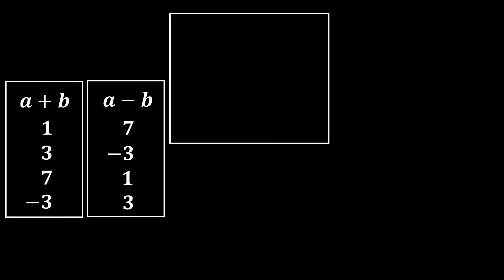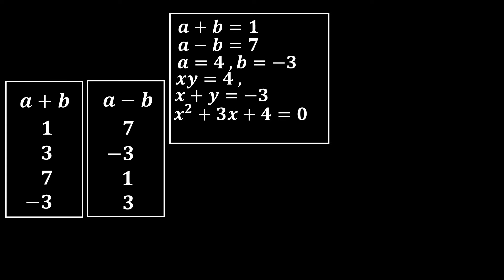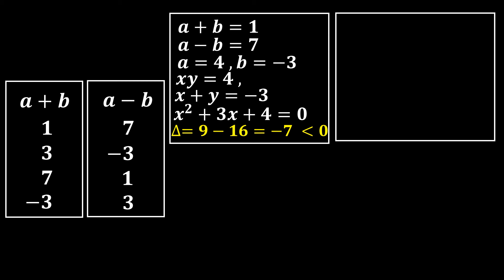We frame four systems. System 1: a + b = 1, a - b = 7. Adding gives 2a = 8, so a = 4 and b = -3. Thus xy = 4 and x + y = -3. Forming the quadratic x² - (sum)x + (product) = 0 gives x² + 3x + 4 = 0. The discriminant is negative, so complex solutions are generated — this system is rejected.